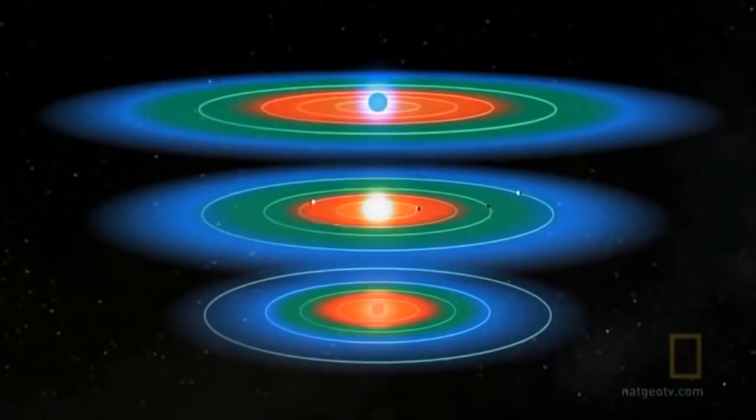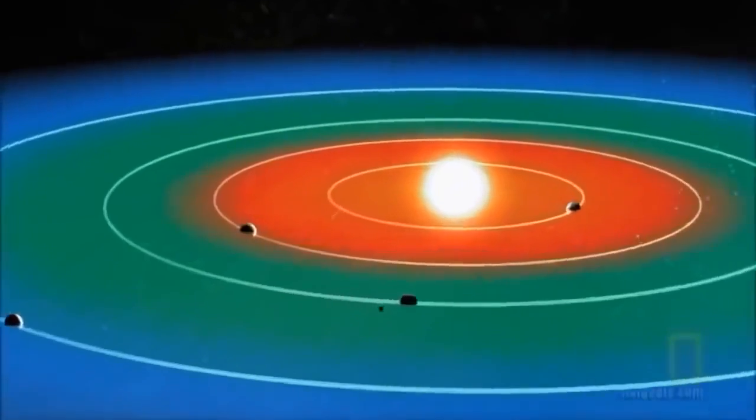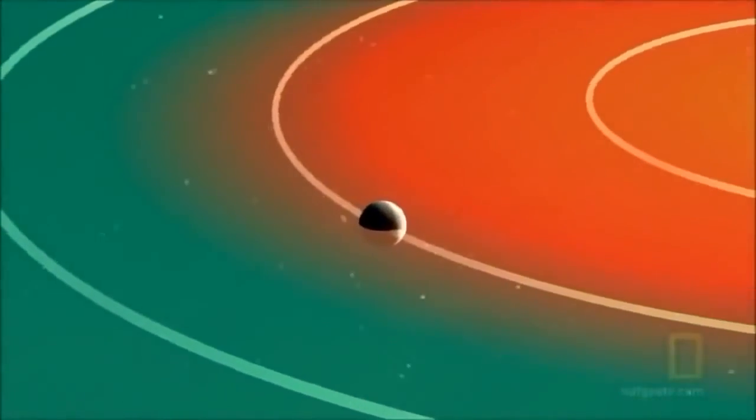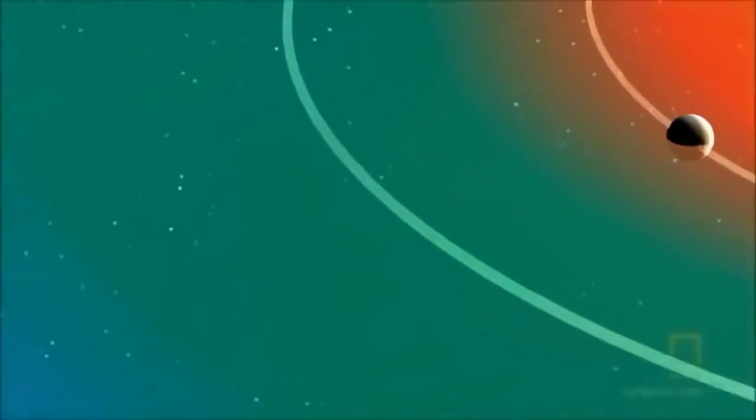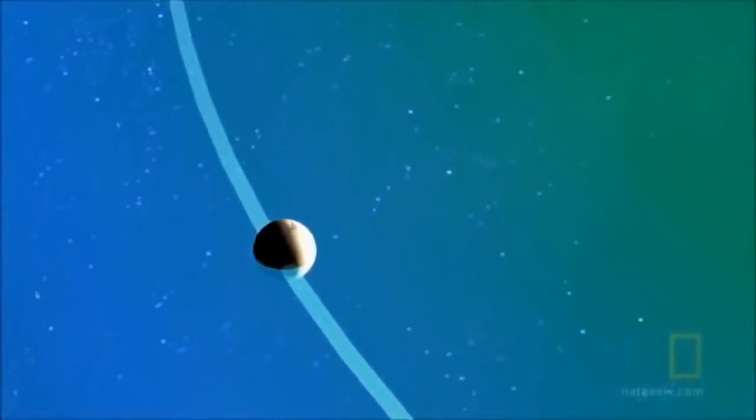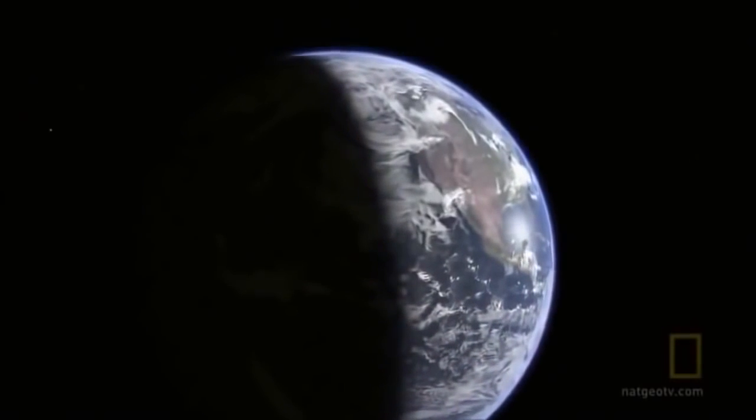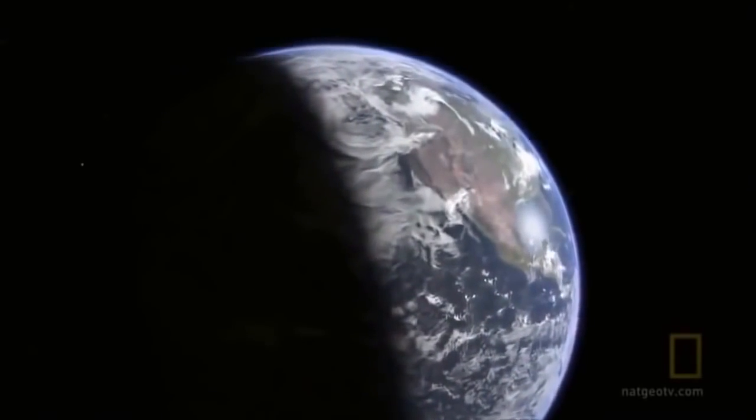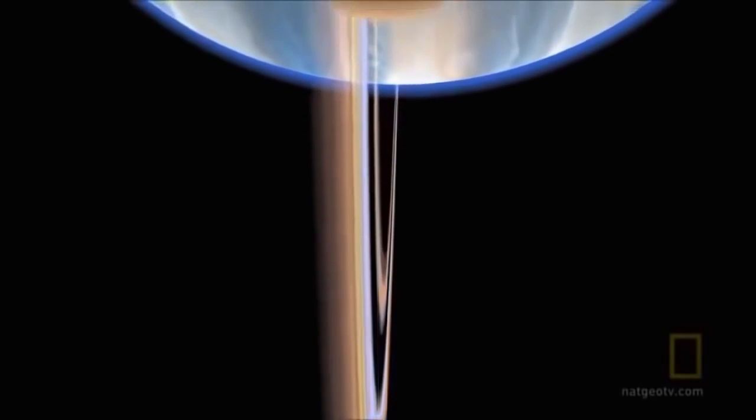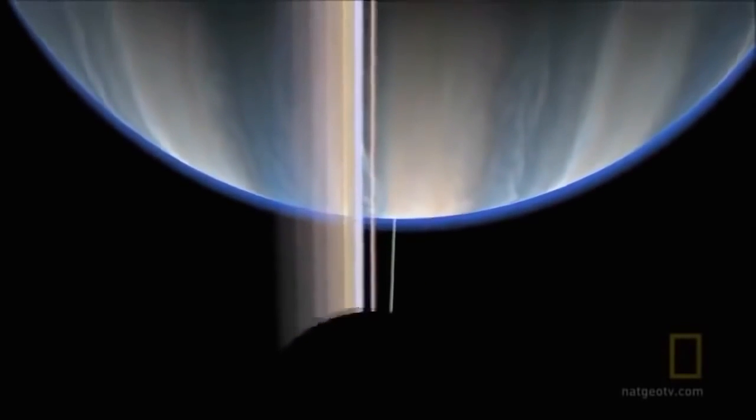Every star has a Goldilocks zone, where that zone is depends on the size and temperature of the star. In our solar system, Venus marks the inner boundary and Mars the outer boundary. Earth and its abundance of life is right in the middle. The yo-yo planet passes through the Goldilocks zone twice a year.